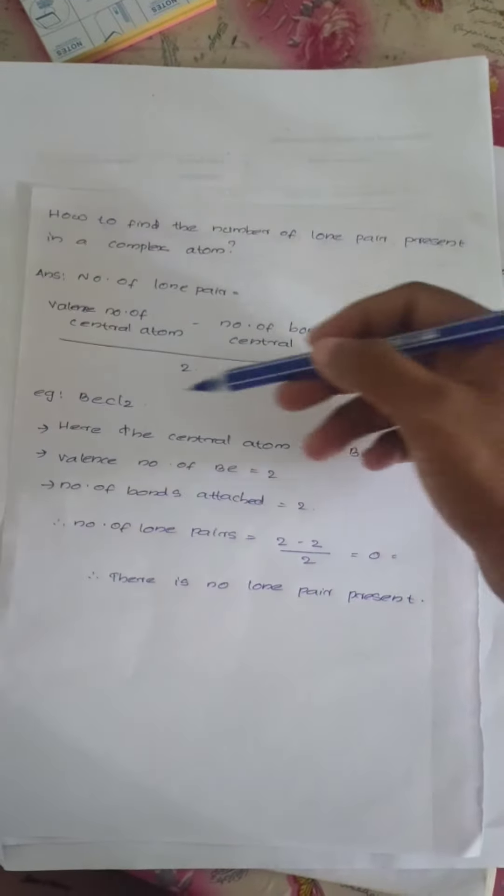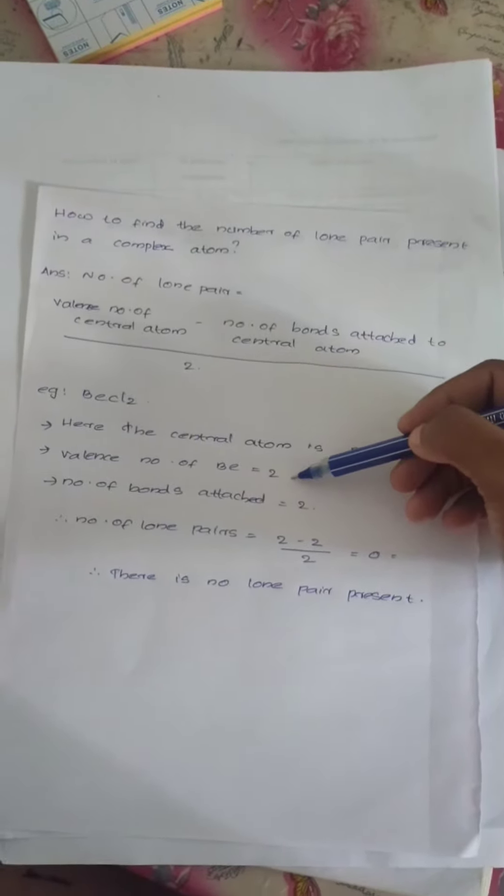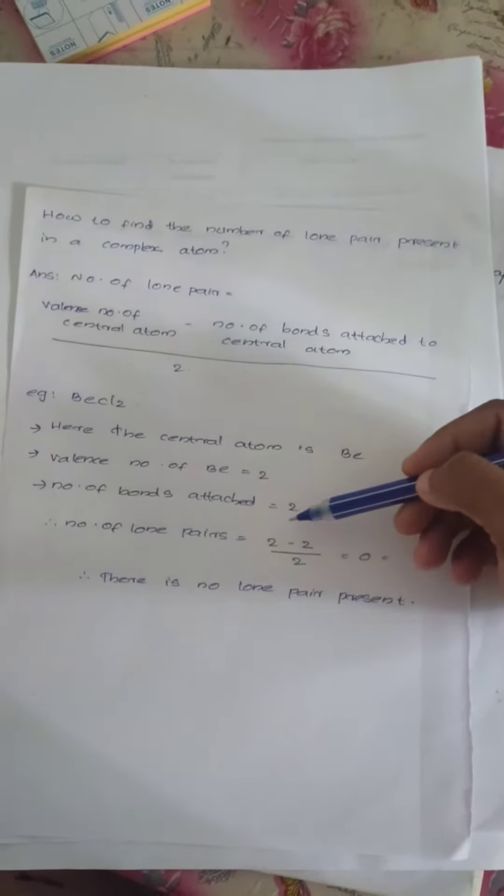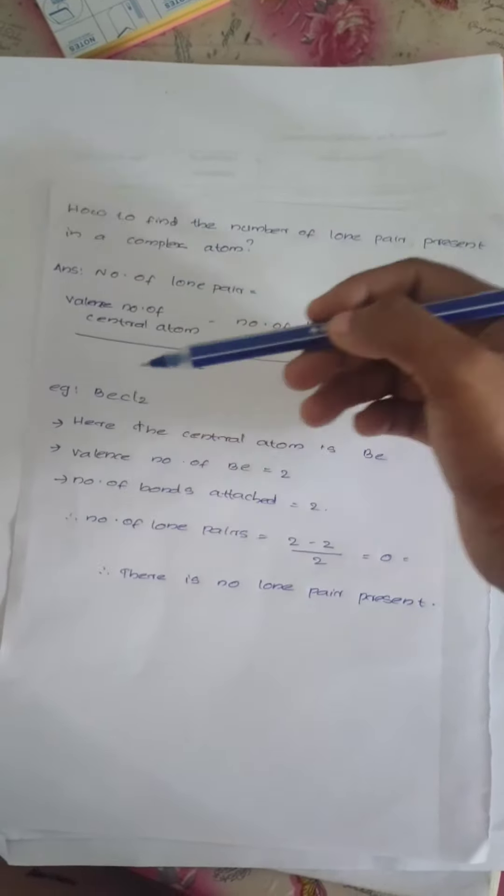Here the central atom is beryllium and the valence number of beryllium is 2. The number of bonds attached to beryllium is 2. There are 2 chlorine atoms attached to the central atom beryllium.